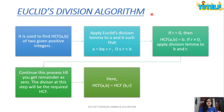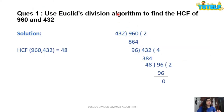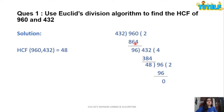Let's understand Euclid's division algorithm with an example. We want to find HCF of 960 and 432. First, decide which number is greater — 960 is greater than 432. Applying the long division method: 432 × 2 = 864, so remainder is 96. Since remainder is not 0, treat this remainder as the new divisor and the divisor as the new dividend. 96 × 4 = 384, remainder is 48. Then 48 × 2 = 96, remainder becomes 0. So the last divisor, 48, is the HCF of 960 and 432.